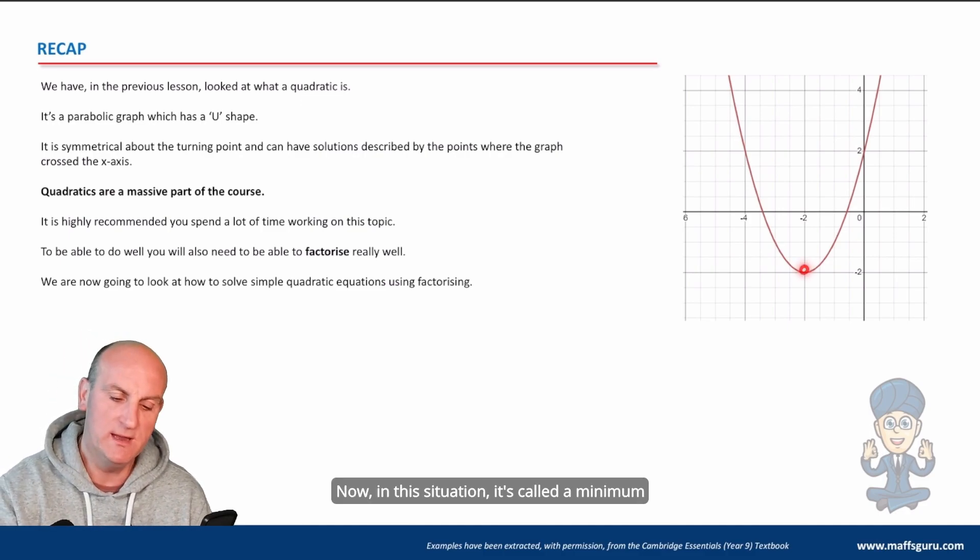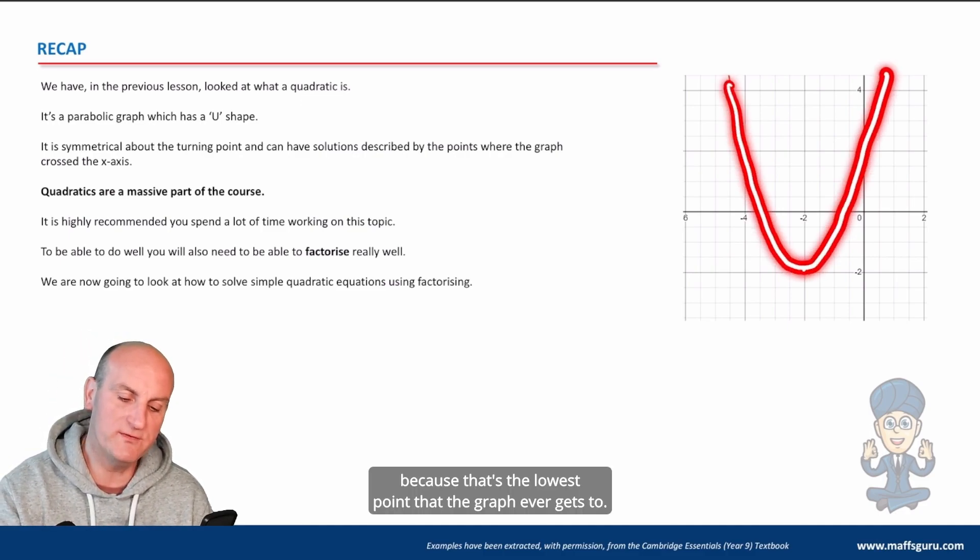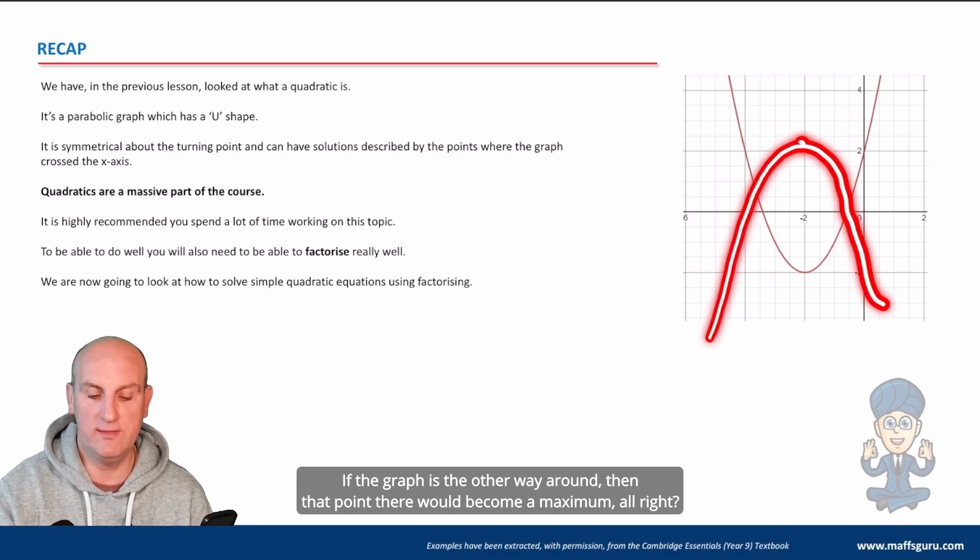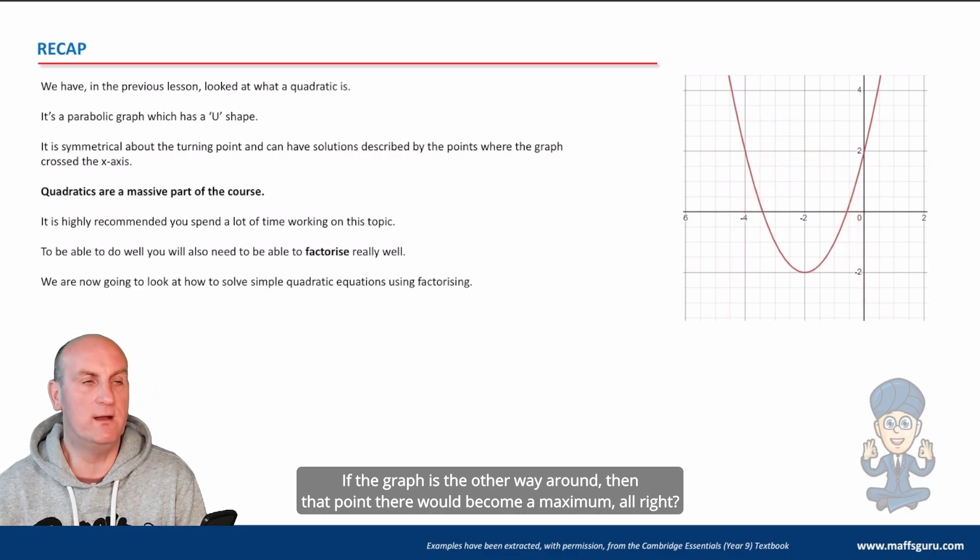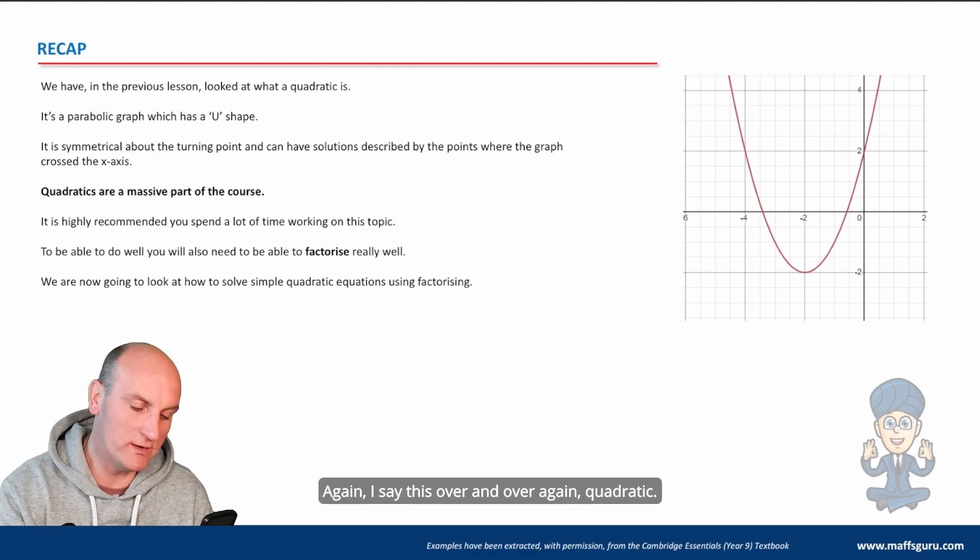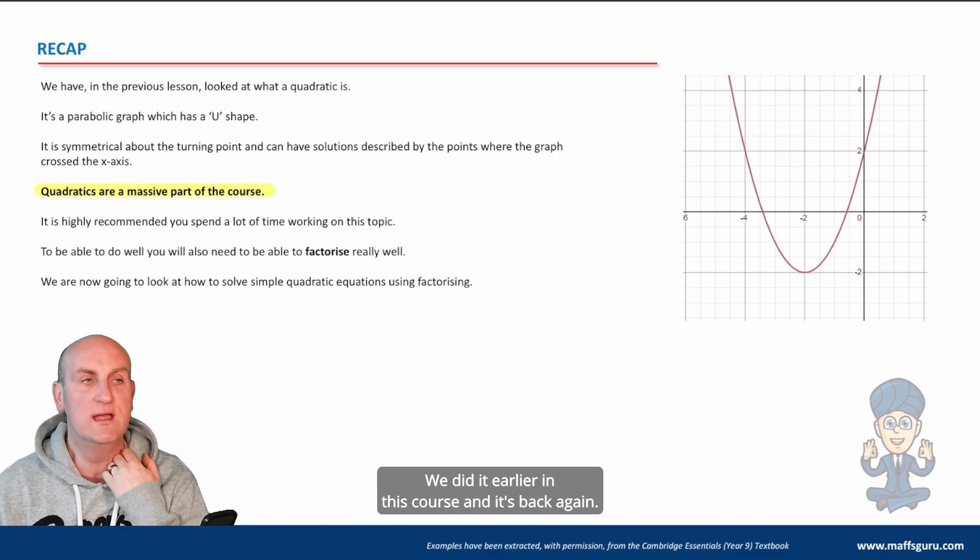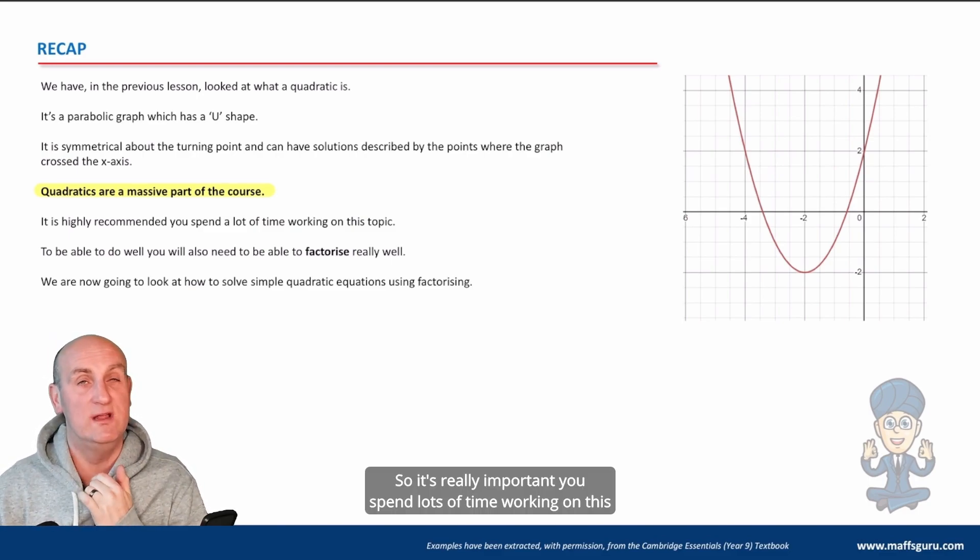Now, in this situation, it's called a minimum because that's the lowest point that the graph ever gets to. If the graph is the other way around, then that point there would become a maximum. Again, I say this over and over again. Quadratics are massive. We've already done it in the first semester. We did it earlier in this course, and it's back again. So it's really important that you spend lots of time working on this.